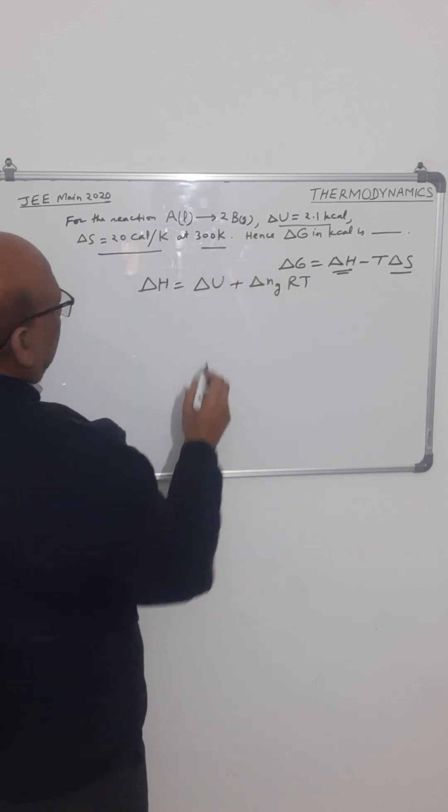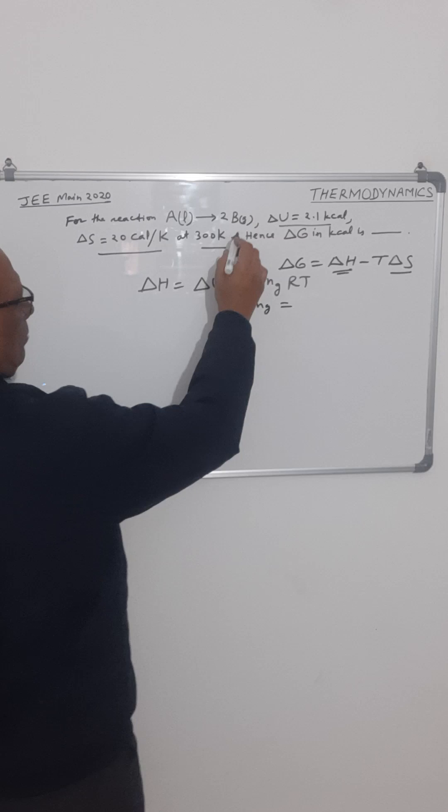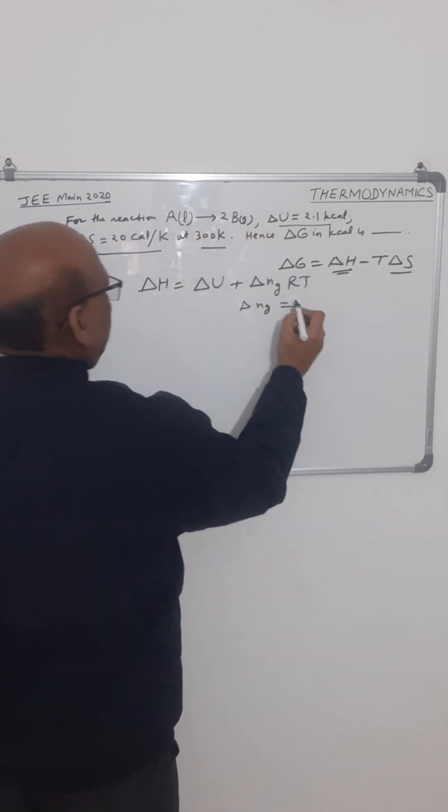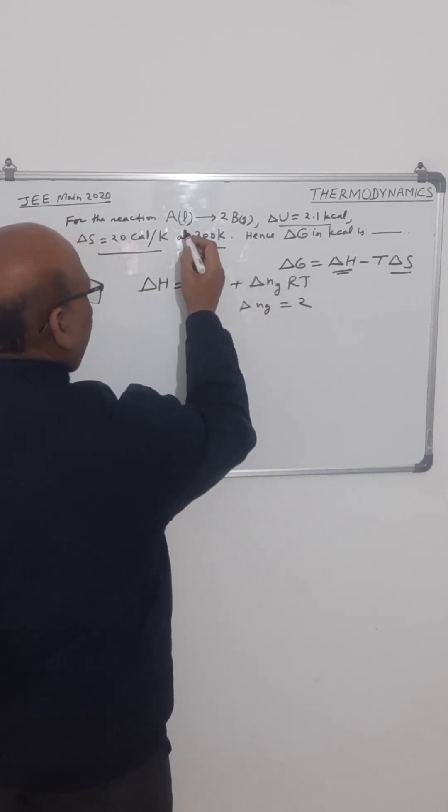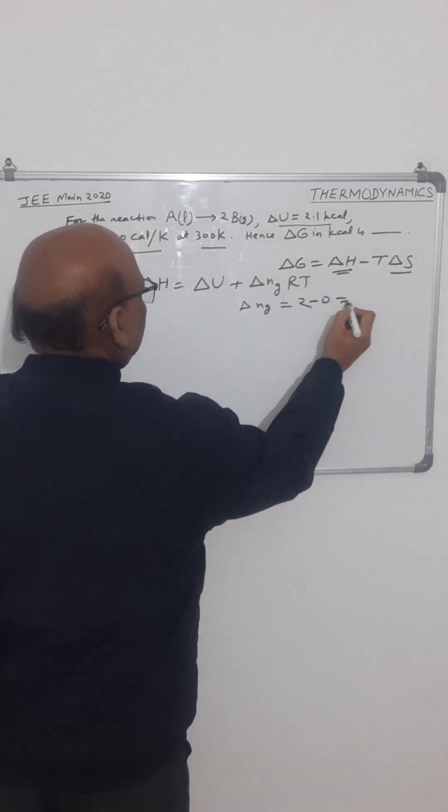The product is in the gaseous stage. So delta NG in this case will be number of moles of the gaseous products minus number of moles of the gaseous reactants. Here there is no gaseous reactant, only liquid is there, so delta NG will be 2 minus 0, that is 2.